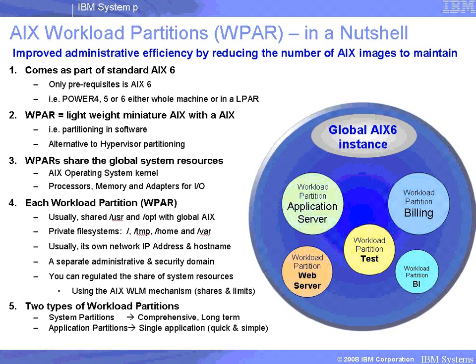Let's look at some of the details now of a workload partition. We can run a workload partition wherever we can run AIX6 — so this is on the Power4, Power5, or Power6 machines, or in the Powerblades, the JS20 or JS21. We can run AIX either in the whole machine or just in a logical partition, a part of the machine. A good way of thinking of a WPAR is that it's a lightweight miniature copy of AIX running within AIX itself.